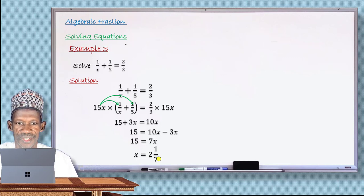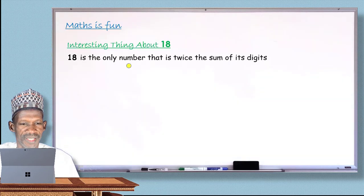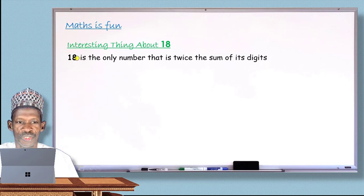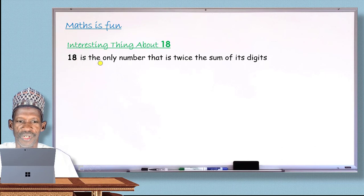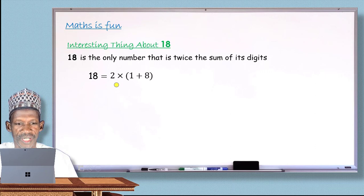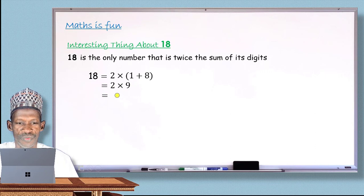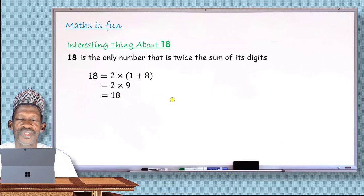I'll explain what is interesting about the number 18. 18 is the only number that is twice the sum of its digits. If you find the sum of the digits 1 and 8, which is 9, and multiply by 2, you get back 18. So 18 = 2 × (1 + 8) = 2 × 9 = 18. This is the only number for which this holds. We'll see more interesting numbers in subsequent lessons.